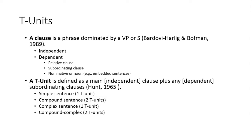For our quantitative study — dealing with numbers and statistics — we needed a unit of analysis to measure the text. We used T-units. To understand a T-unit, we need to understand clauses: independent and dependent, including relative clauses, subordinating clauses, and noun clauses. A T-unit is a main clause with any dependent clauses attached. A simple sentence is one T-unit; a compound sentence is two T-units; a complex sentence is one T-unit; and a compound-complex sentence with two main clauses and one dependent clause is two T-units.